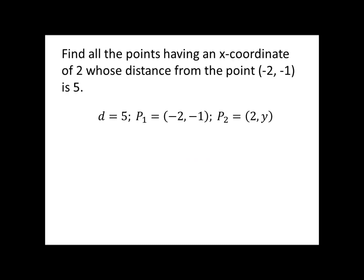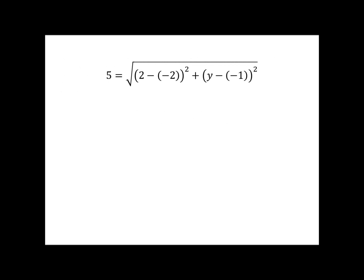Here's a different application of the distance equation. We want to find all points with an x-coordinate of 2 whose distance from the point negative 2, negative 1 is 5. In this problem, the distance is given — we're plugging in d equals 5. One point is negative 2, negative 1, and the other point has x equals 2 but an unknown y value. There will actually be two y values.